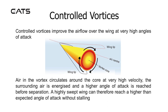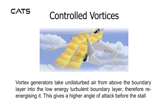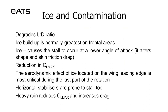Controlled vortices improve the airflow over the wing at very high angles of attack. Air in the vortex circulates around the core at a very high velocity, energising the surrounding air so that a higher angle of attack is reached before separation. A highly swept wing can therefore reach a higher than expected angle of attack without stalling. Vortex generators take undisturbed air from above the boundary layer into the low energy turbulent boundary layer, re-energising it and giving a higher angle of attack before the stall.